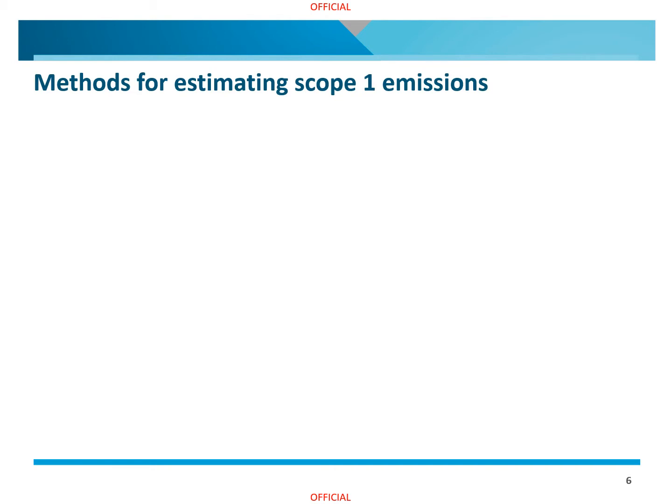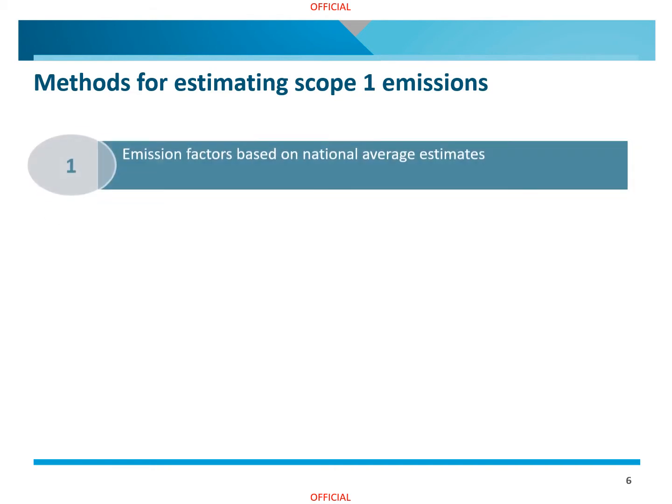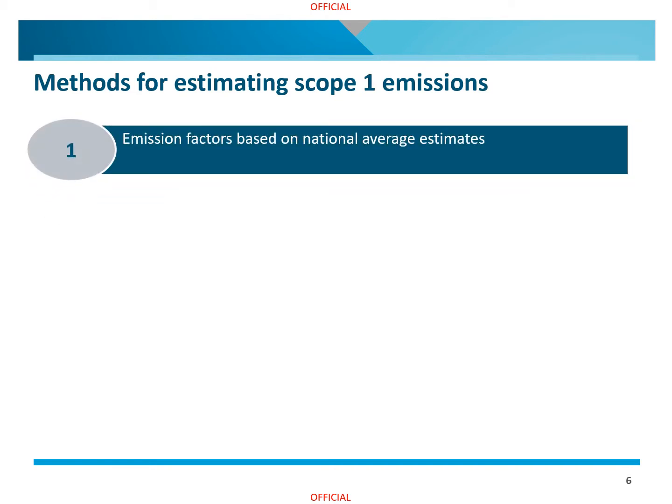For estimating scope 1 emissions, Method 1 is the default method. It applies emission factors based on national average estimates. In EARS, these default emission factors are built in such a way that emissions are automatically calculated for you.